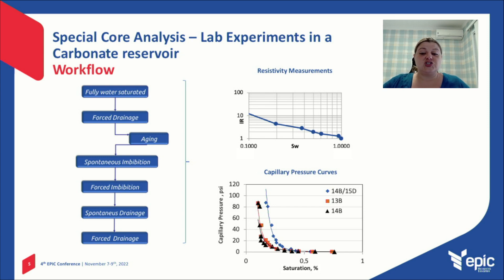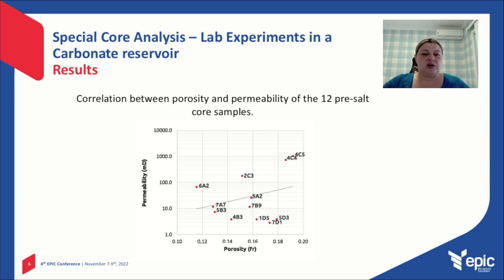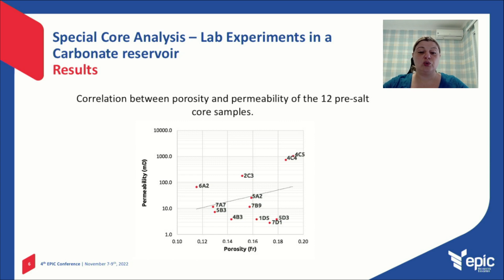We are in the beginning of the experimental campaign, and I will show the first results of this work. These are the results of basic petrophysical analysis. The permeability results show values between 0.003 millidarcies and 1 darcy. The porosity results show values between 12 and 20 percent. When we plot this data on the correlation graph, it is possible to confirm that the permeability variation results in a low correlation with porosity.